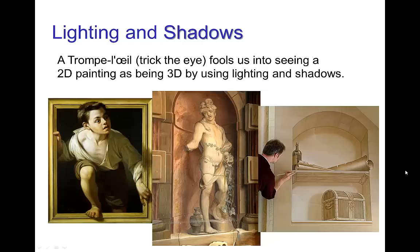Another visual cue for depth and distance is lighting and shadows. This is commonly used in the so-called trompe l'oeil, which is the example of a painting that, by appropriate use of lighting and shadows, makes a 2D fresco appear as if it is actually a 3D object.